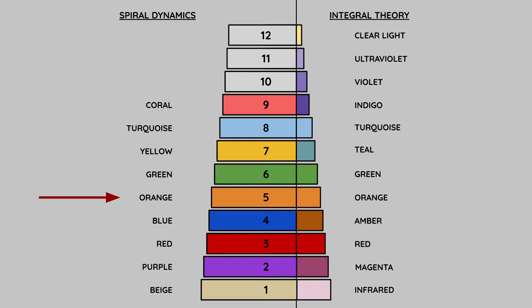When we speak about these stages, we like to differentiate the Spiral Dynamics and integral theory color coding systems. If you're familiar with Ken Wilber's work, he changed some of these colors. Our previous stage was Blue in Spiral Dynamics, which Ken Wilber called Amber. Orange, just like Red, remains the same in integral theory.